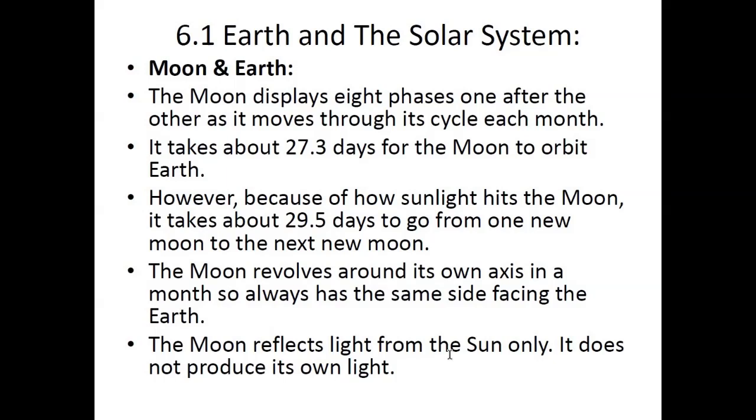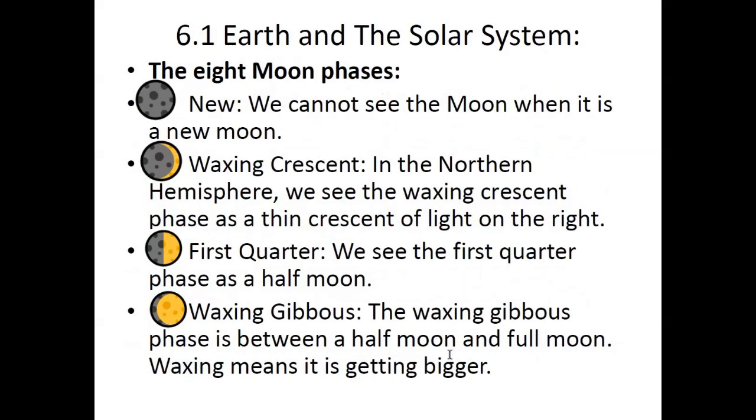The Moon revolves around its own axis in a month, so it always has the same side facing the Earth. From Earth, we have never seen the other side of the Moon. Some space probes have captured images of the other side and sent them to Earth. Because of the Moon's rotation on its axis, it is always locked so the same side faces Earth. The Moon does not have its own light; it reflects light from the sun.